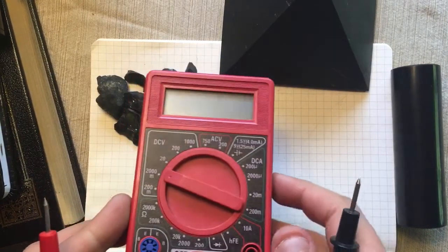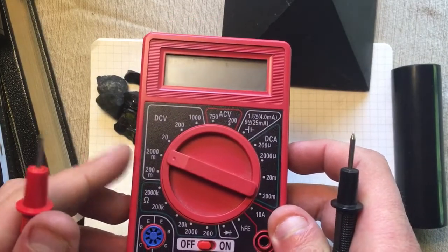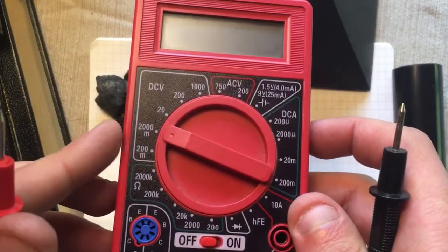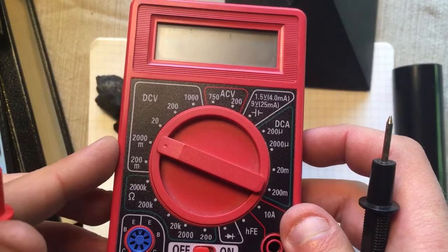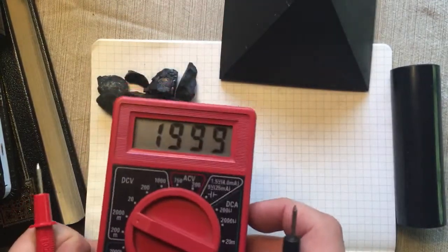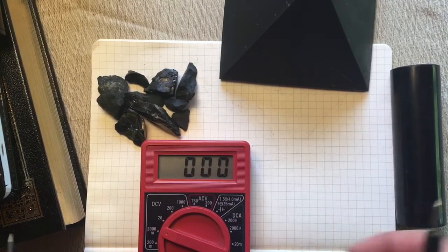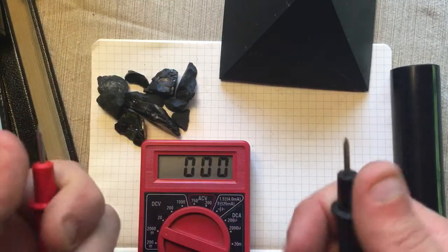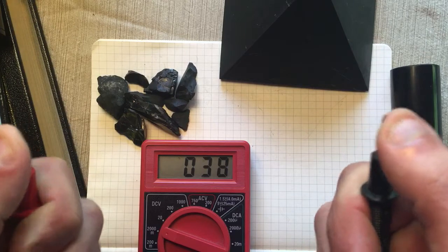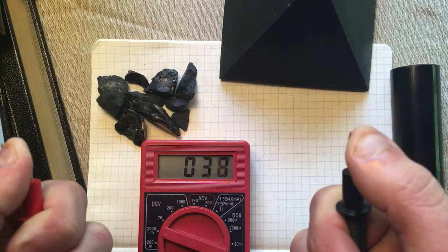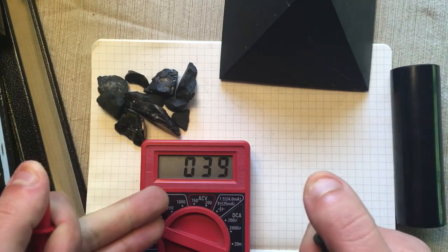Okay, so here we have a multimeter set to DC volts, specifically the 2000 millivolt or 2 volt scale. Using that, I'm going to get a baseline voltage reading just across my body. I'm not grounded right now. This is just from the left side to the right side of my body.